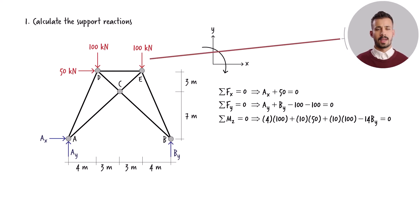The 50 kN load has a moment arm of 10 meters. So the moment of the load about point A equals 10 times 50. This load has a moment arm of 4 meters, so we get 4 times 100. The moment arm for this load is 4 plus 3 plus 3, or 10 meters. So we get 10 times 100 here.